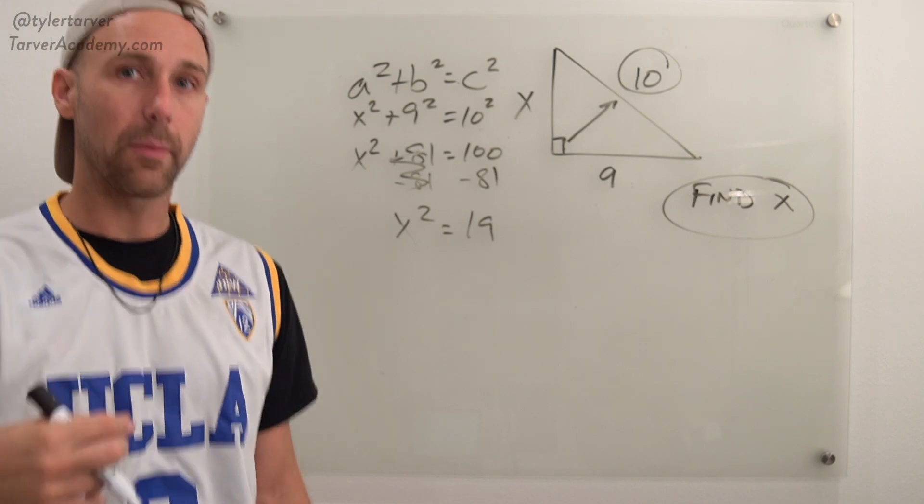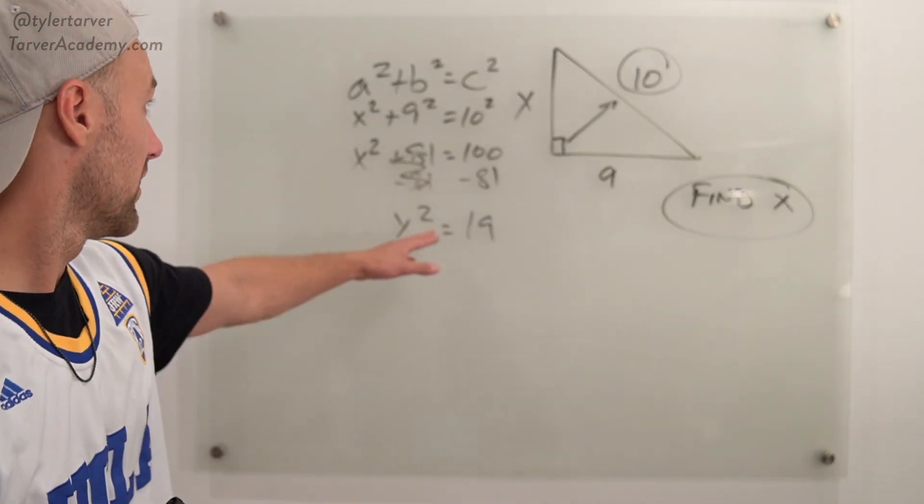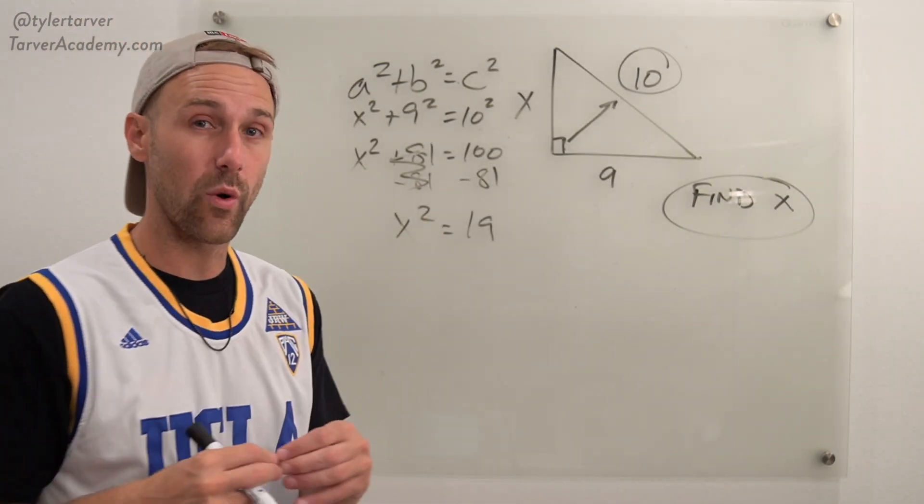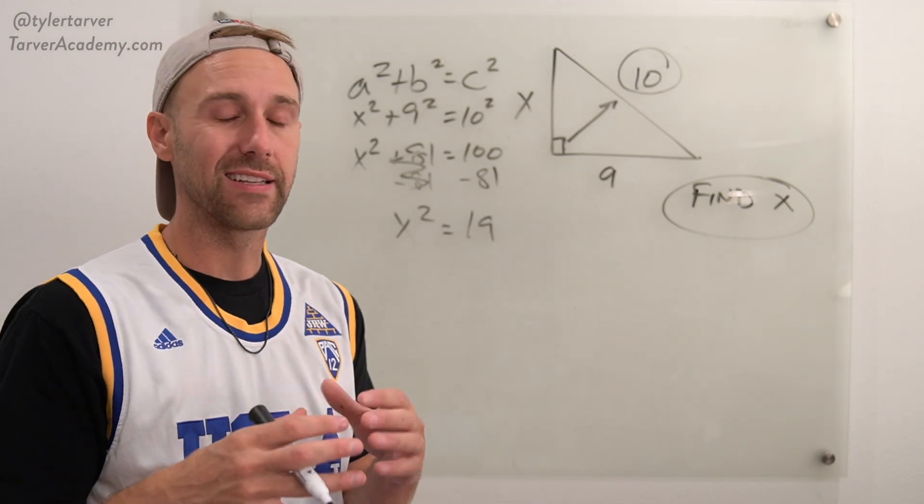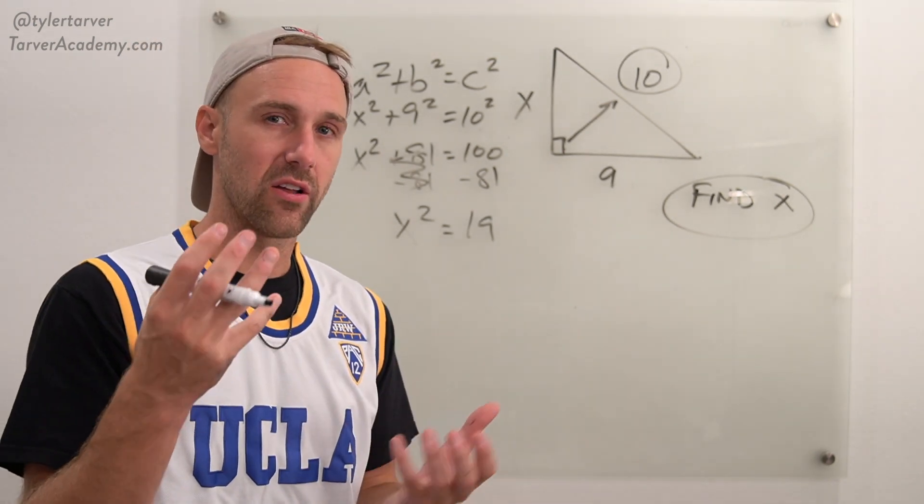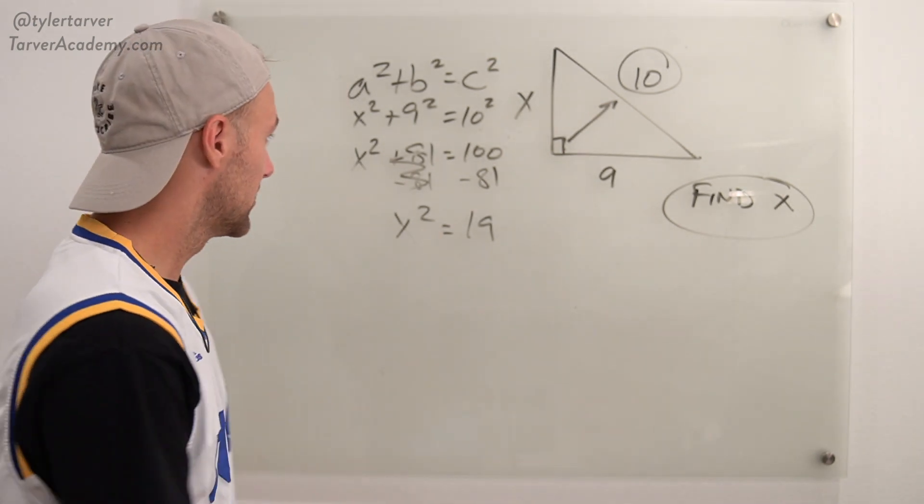Now you've got to do the opposite to get rid of that square. What is the opposite of squaring something? Give you a hint. It's actually in the name. Square, square root. Let's go.